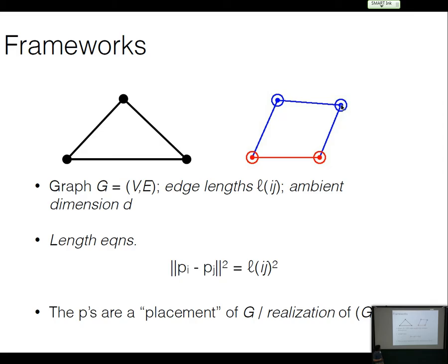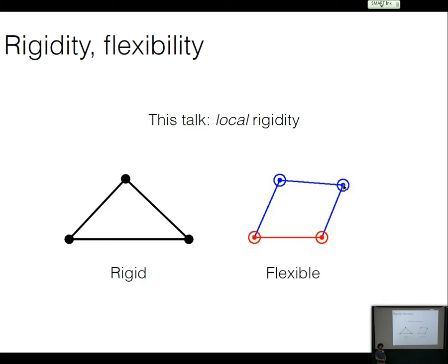The setup is that you end up with a graph, you have some edge lengths, and also an ambient dimension. The ambient dimension actually matters for whether the graph is rigid or flexible sometimes. Shinichi touched on universal rigidity, but I'm not doing anything so fancy — my rigidity is always local rigidity, now called local rigidity.